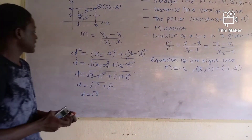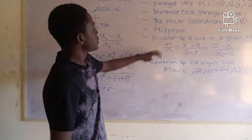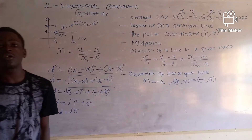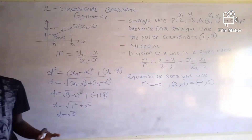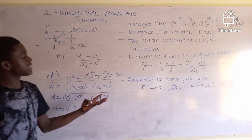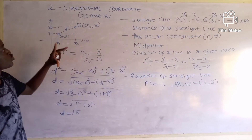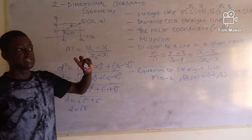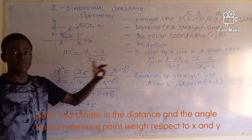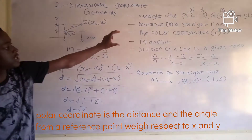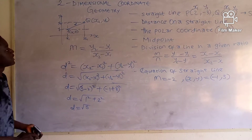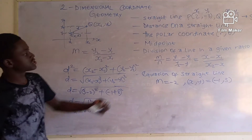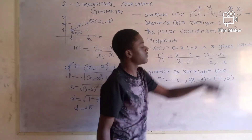In 2D coordinate geometry we also have polar coordinates. Polar coordinates deal with a two-dimensional coordinate system that describes the distance and an angle from a reference point. The angle of this reference point is written as theta (θ), and we have our r.